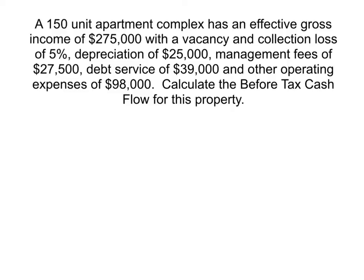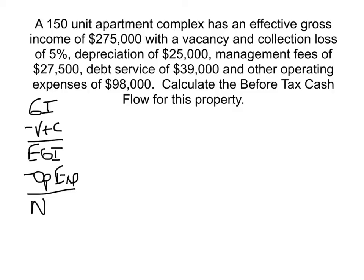Pause the recording and try to solve this problem. Recall from the previous page: given gross income minus vacancy and collection is effective gross income. From there you back out the allowable operating expenses to calculate net operating income, and then you back out debt service to calculate before tax cash flow.